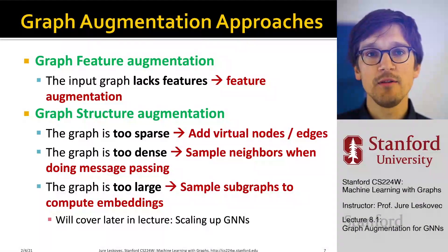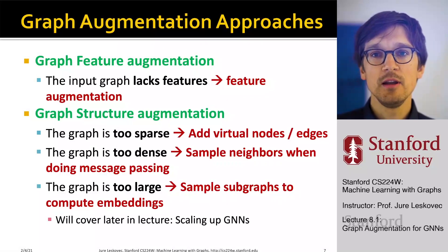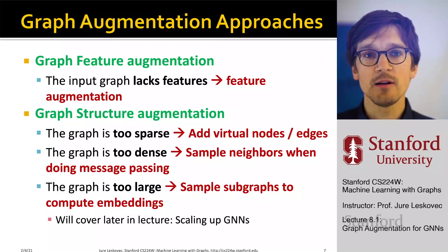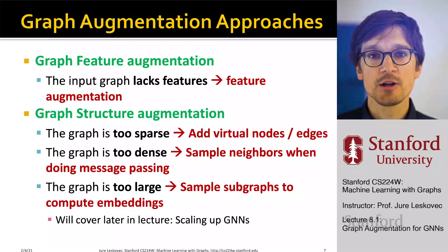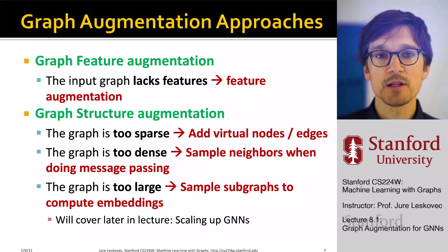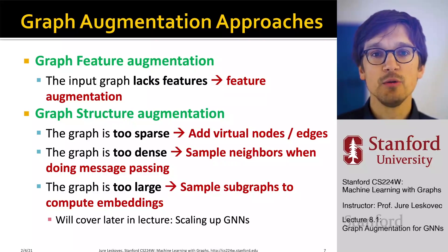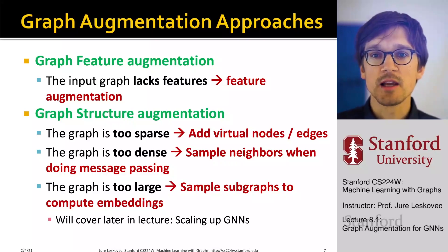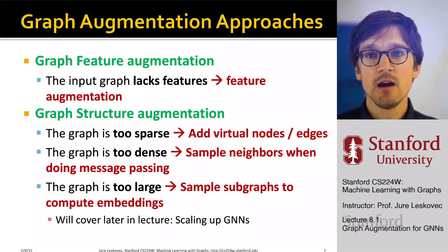Basically, the point is that it is unlikely that the input graph happens to be the optimal computation graph for computing GNN-based embeddings. The techniques we are going to discuss will give you ideas on what we can do to improve the graph structure. We are going to talk about graph feature augmentation — where the input graph may lack attributes — and graph structure augmentation: adding virtual nodes and edges if sparse, sampling neighbors if dense, and subsampling subgraphs if too large.